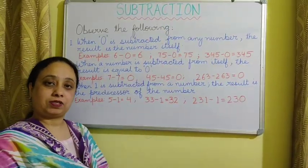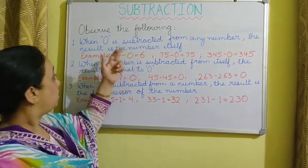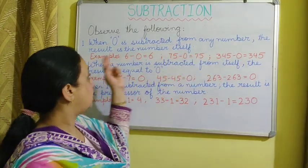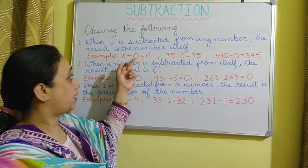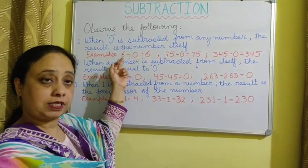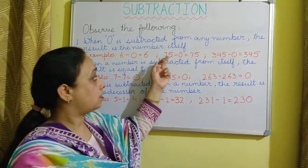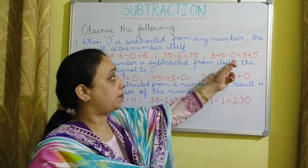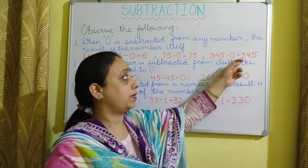We have some more facts about subtraction. When 0 is subtracted from any number, the result is the number itself. For example, if we subtract 0 from 6, the answer is 6. If we subtract 0 from 75, the answer is 75. And if we subtract 0 from 345, the answer is 345 — the number itself.